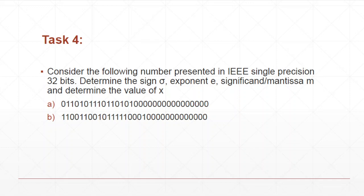This is task 4. We have to consider a number presented in IEEE single precision 32 bits and we have to determine the sign bit, the exponent, and the significand or mantissa M, and determine the value of X — the value of the number in decimal. We are given two binary numbers and we have to convert them to decimal numbers and also write down the sign bits, exponent bits, and the mantissa.